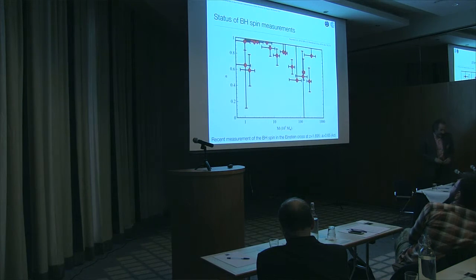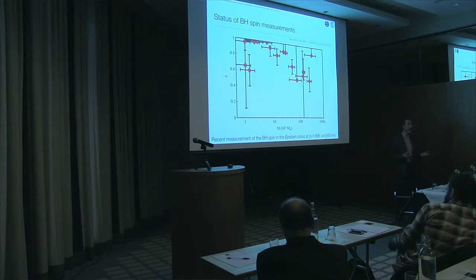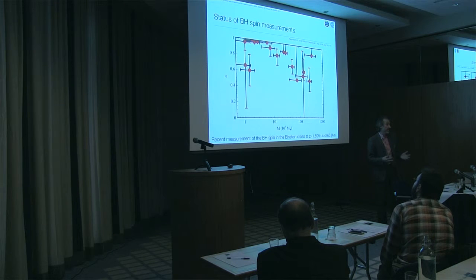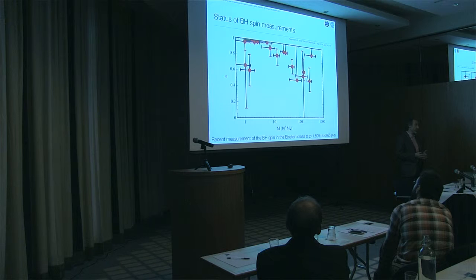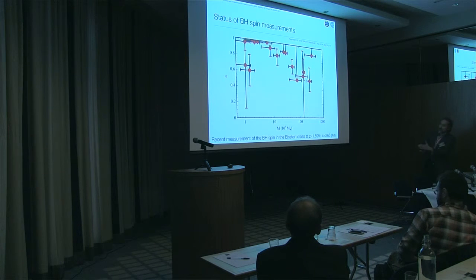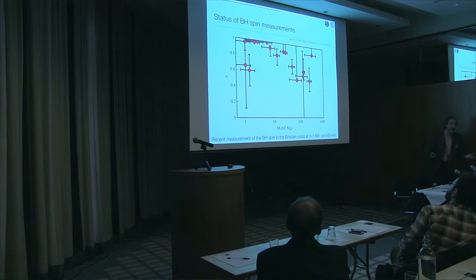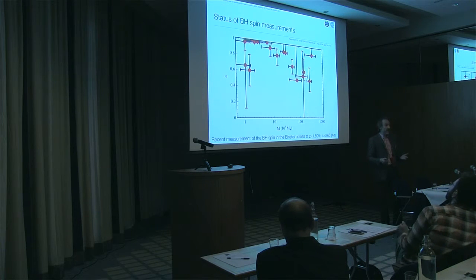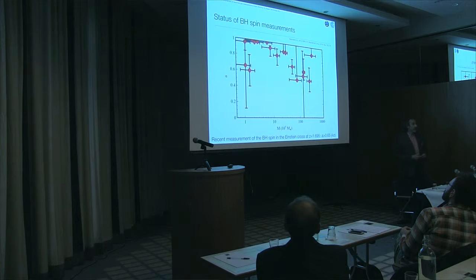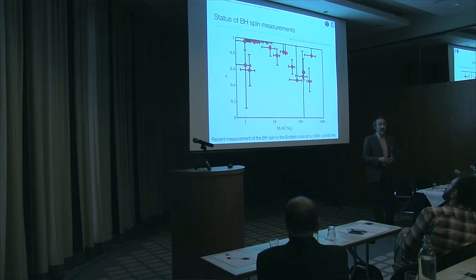Let me directly go to the main observational substance of my talk. What I show here is a recent compilation of measurements of black hole spin in AGN, from last year, which includes essentially all the reliable measurements that have been done so far with some exceptions. This plot shows the black hole spin on the y-axis as a function of the black hole mass, which in AGN can be determined independently through different methods, optimally through optical reverberation measurements. The statistic is not high — about 20 measurements — so we can't really do any serious statistical analysis, but there are some indications of trends.